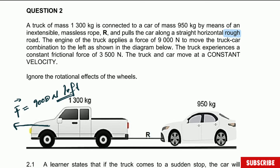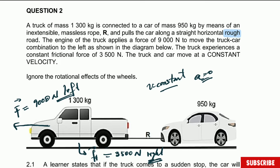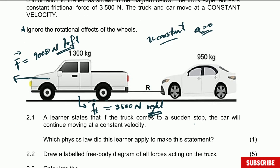The truck experiences a constant frictional force of 3,500 Newton acting to the right. The track and the car move at constant velocity, which means acceleration is equal to zero. We also ignore the rotational effect of the wheels. It states that if the truck comes to a sudden stop, the car will continue moving forward at constant velocity due to inertia.